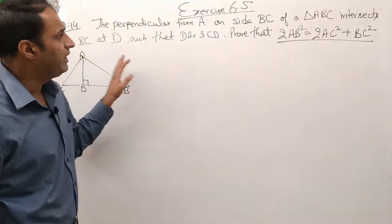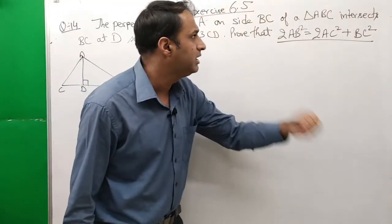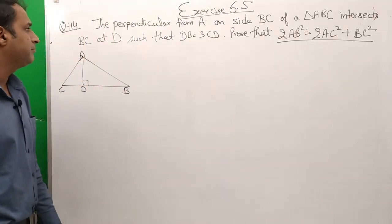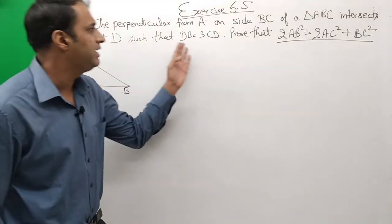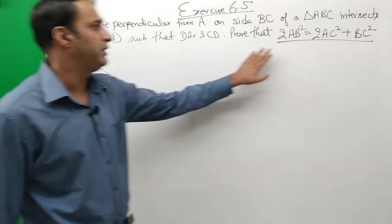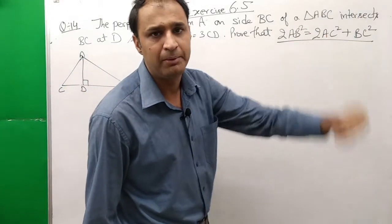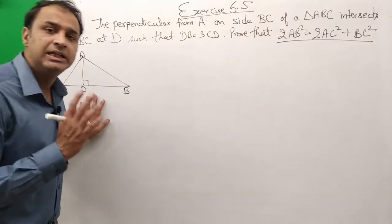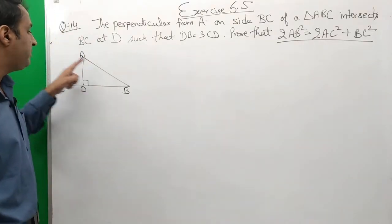The perpendicular from A on side BC of a triangle ABC intersects BC at D such that DB is equal to 3CD. Prove that 2AB² is equal to 2AC² plus BC². Here we have a figure given — a triangle ABC.